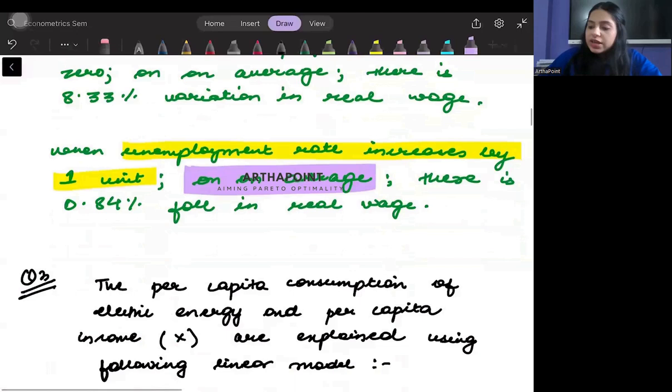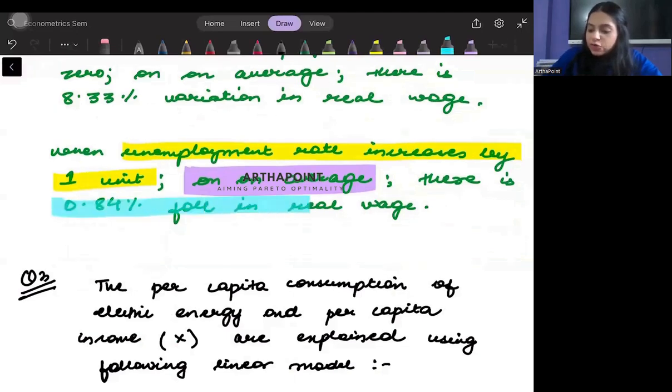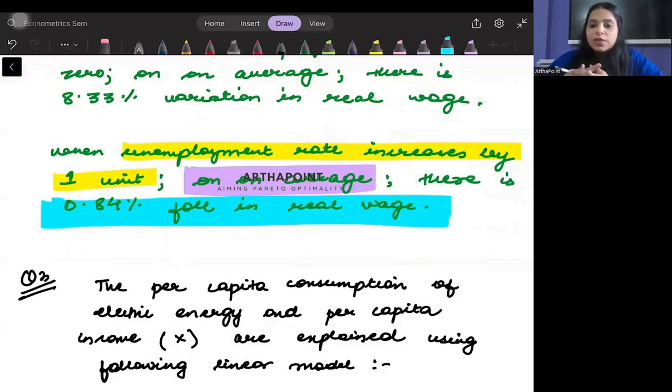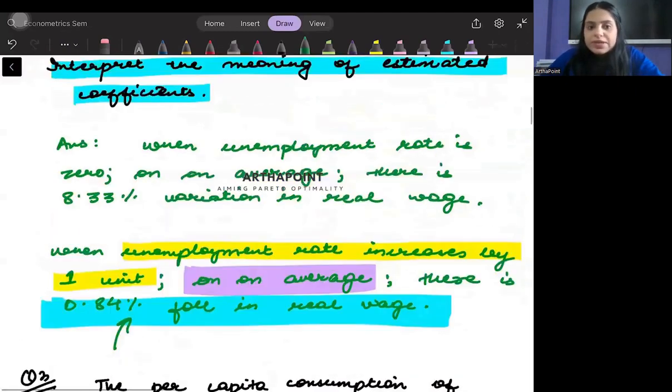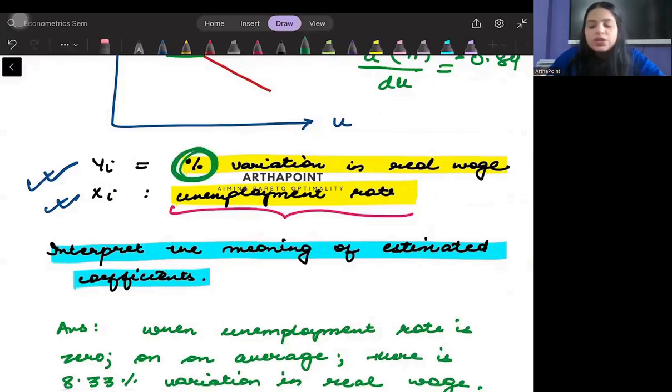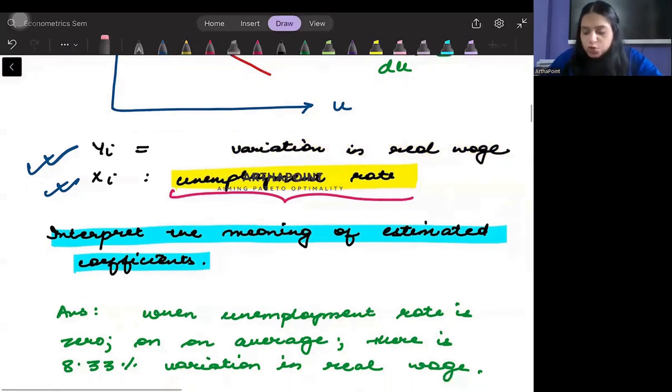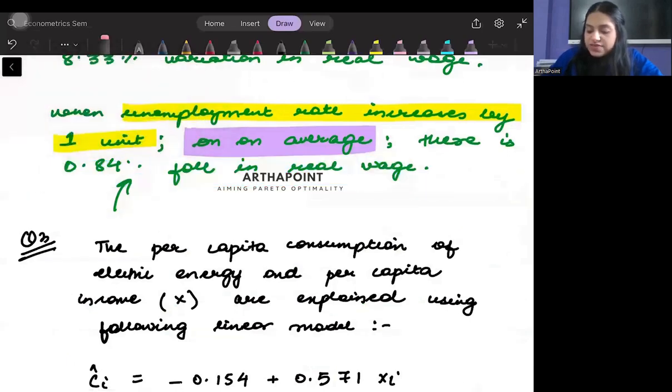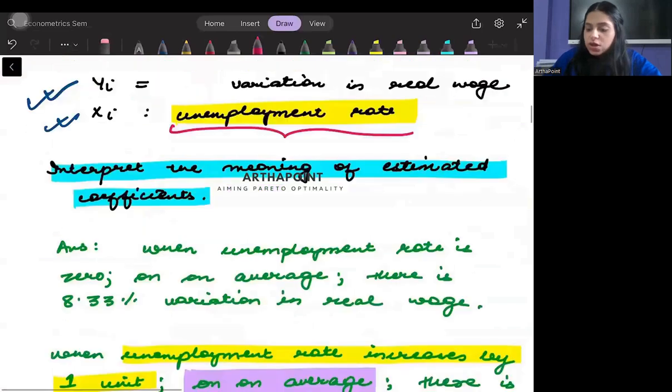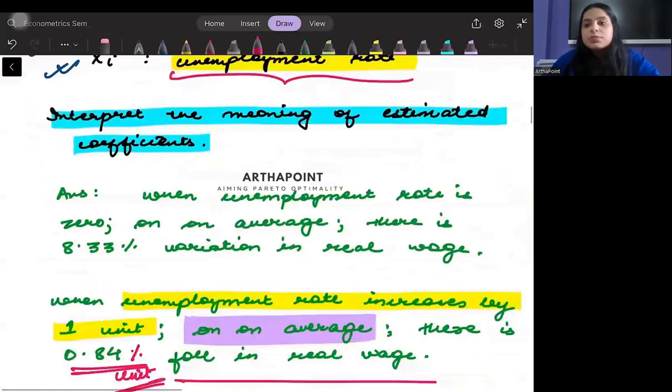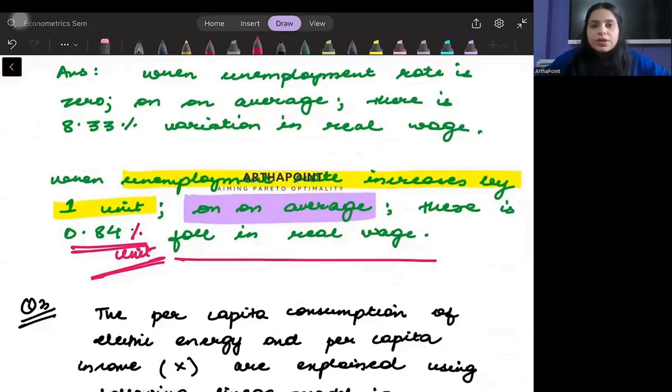Therefore, what I can say is that when unemployment rate increases by one unit, on an average—using this word is very important because we always talk about the average changes, the expected changes—there will be 0.84 percent fall in the real wage. Why am I using percentage? Because it is given that this is measured in percentage. Otherwise, if they would have just said variation in real wage without percentage, then I would have said 0.84 unit fall in the real wage. I am being able to use the word percentage here because in the question itself I am given the term percentage.